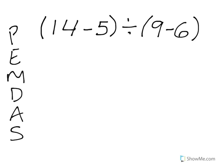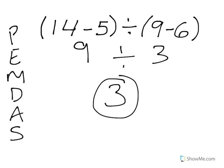All right. Do our parentheses first. 14 minus 5 is 9. Over here we have 9 minus 6 is 3. Put the division symbol. We're going to do our multiplication and division. 9 divided by 3 is 3. There is nothing else for us to do. So our answer here is 3.